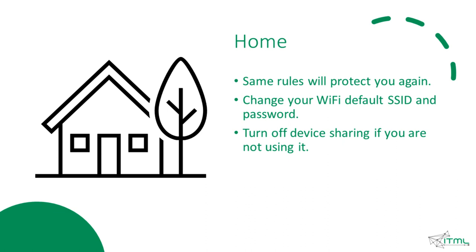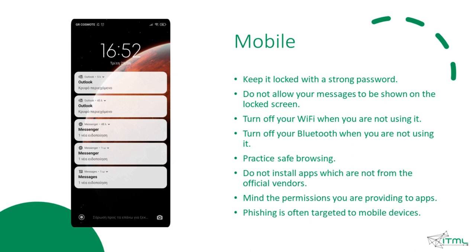Everything mentioned in this video applies to your home devices as well. Even if home is usually a safe place, it is good to have some extra protection there too. A useful tip is to change your Wi-Fi username and password, as there are tools with which someone can find these credentials and use them to access your network and information. Regarding your mobile, which is the device we use most, always keep it locked, do not allow messages to be previewed on your locked screen, turn off Wi-Fi and Bluetooth when you do not need them, practice safe browsing, and pay attention to the applications you download and the permissions you provide them.